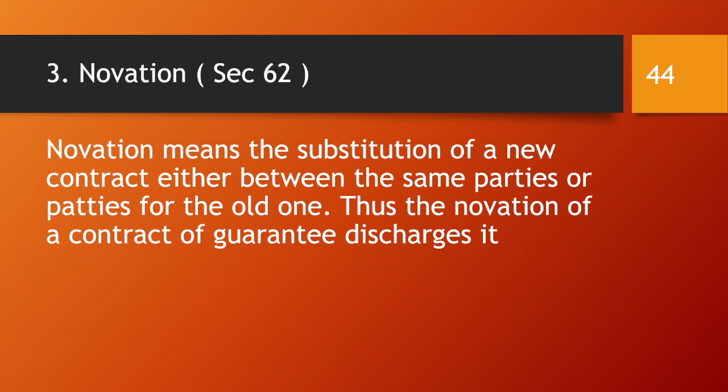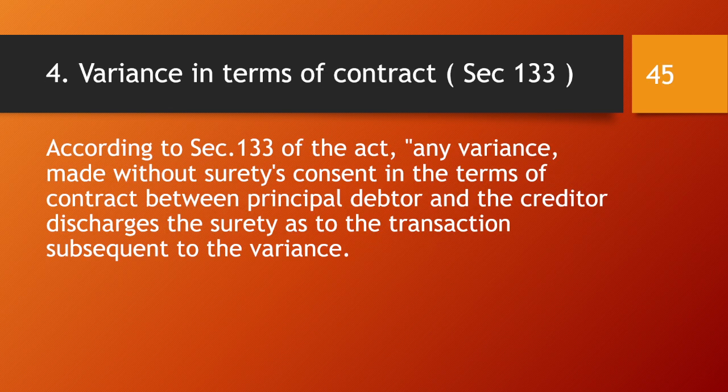The next method of discharge is novation — the substitution of a new contract, either between the same parties or new parties, for the old one. The revocation of a contract of guarantee by novation discharges the surety. Similarly, variance in terms of contract: according to Section 133, any variance made without the surety's consent in the terms of the contract between the principal debtor and the creditor discharges the surety as to transactions subsequent to the variance.